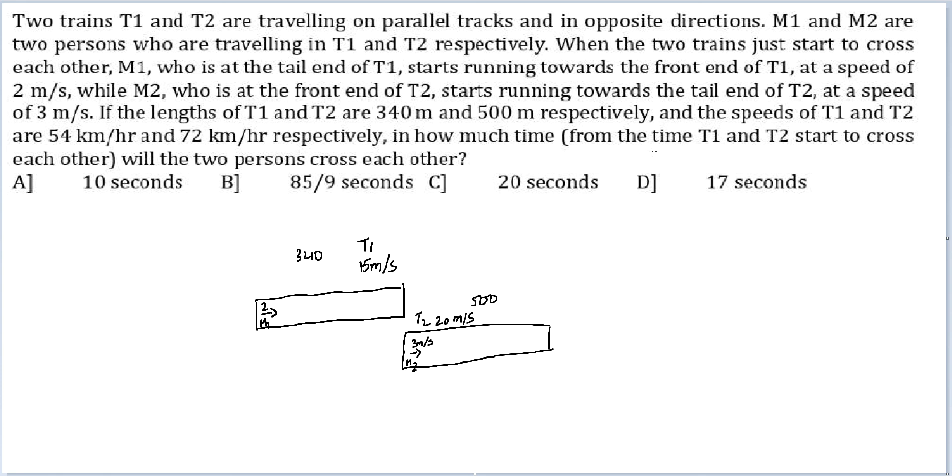In how much time, from the time T1 and T2 start to cross each other till the two persons cross each other. I am looking for time. So the first thing I need to identify is distance. The relative distance between them is 340. Distance is 340. Now I have to identify relative speed.